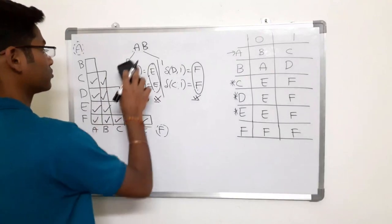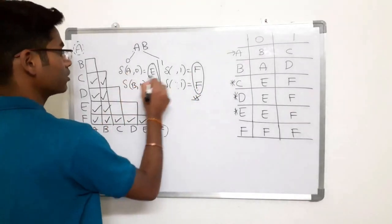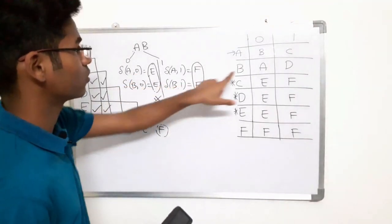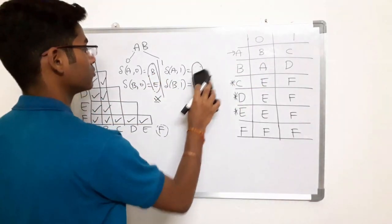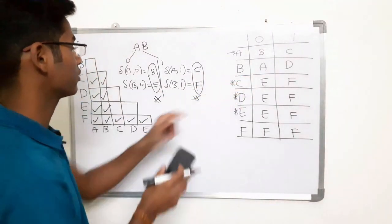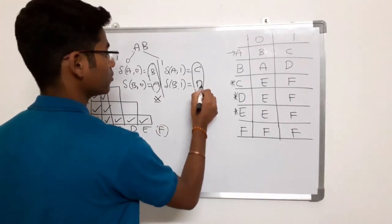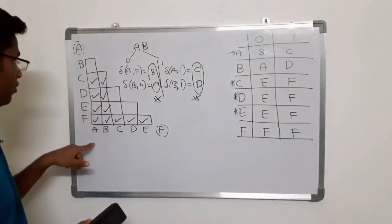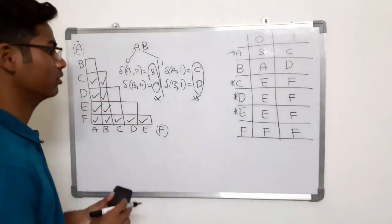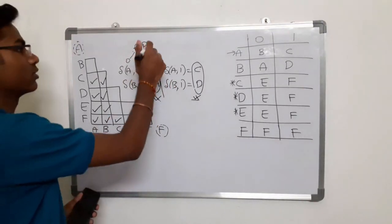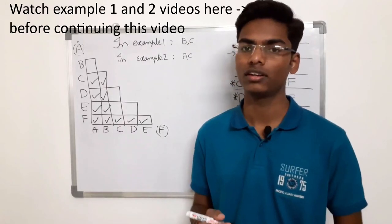Go to next cell D and E: D on 0 is E, E on 0 is E — pair EE. D on 1 is F, E on 1 is F — pair FF. Both EE and FF are unmarked, so leave DE as it is. Next cell D and C: C on 0 goes to E, C on 1 goes to F — pairs EE and FF. Both EE and FF are unmarked in the table, so do not mark DC; it remains unmarked. Now check cell A and B: delta of A on 0 is B, delta of A on 1 is C, delta of B on 0 is A, delta of B on 1 is D. Check if BA is marked: BA is not marked. Check if CD is marked: CD is unmarked. Both are unmarked, so we cannot mark AB. Step three is now completed.